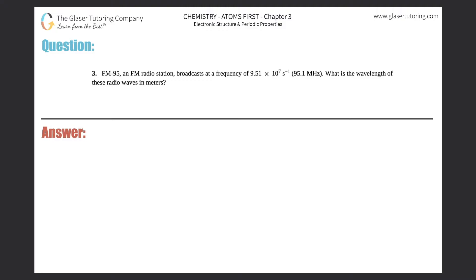Number three. FM 95, an FM radio station, broadcasts at a frequency of 9.51 times 10 to the seventh per second, which is 95.1 megahertz. What is the wavelength of these radio waves in meters?